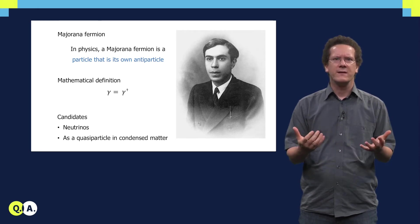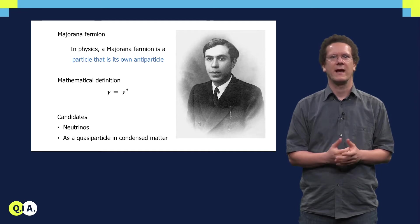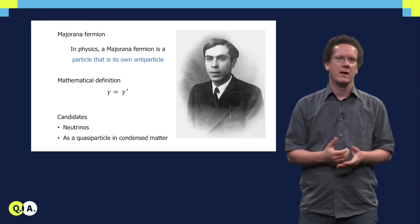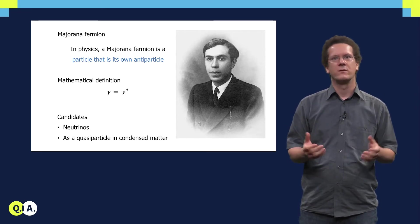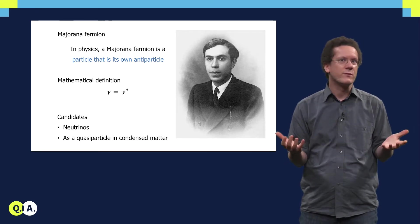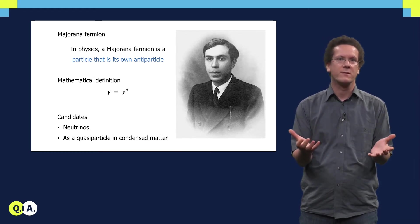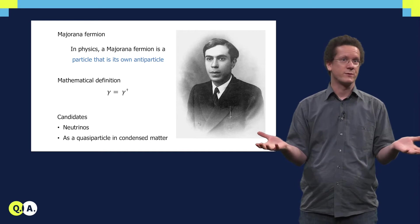But interestingly, to this date there are no Majorana fermions known in nature as elementary particles. This is actually very similar to Majorana's life story itself. He himself vanished during a travel on a ship, nobody knows for sure what happened to him. Majorana fermions also could exist in principle, but nobody knows for sure if they do.